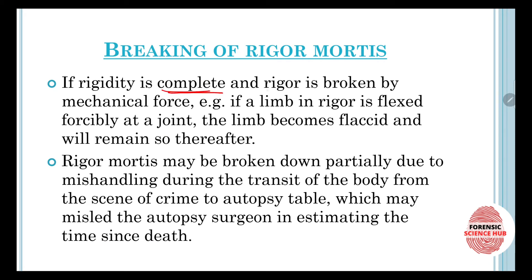If rigidity is complete and rigor mortis is broken by mechanical force — for example, if a limb in rigor mortis is forcibly flexed at any joint — the rigor mortis goes off and that muscle becomes flaccid; it is no longer stiff. Rigor mortis may also be partially broken due to mishandling.